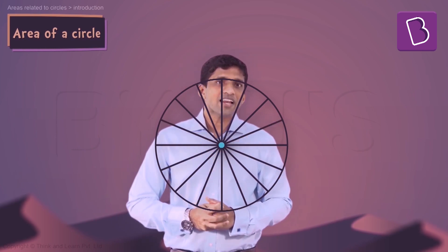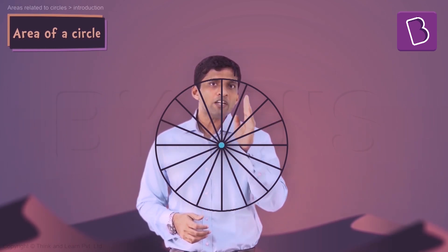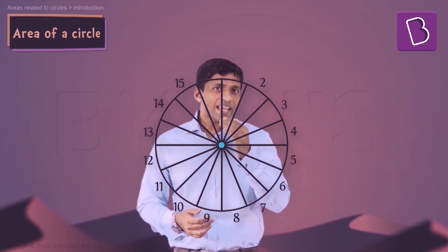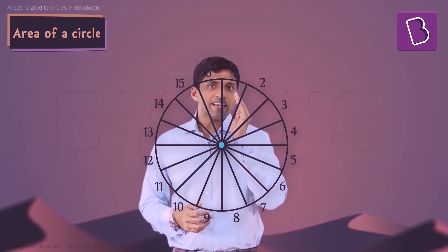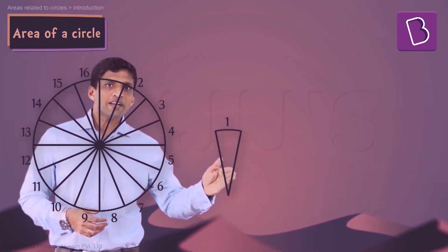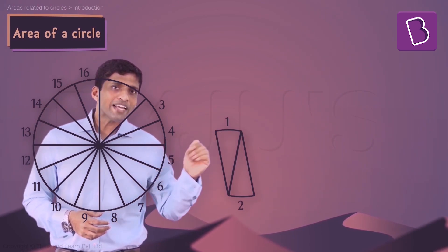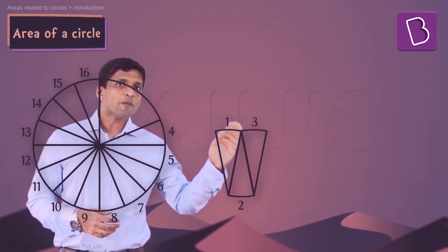Let's take 16 sectors like this and if I number them as 1, 2, 3, 4 up to 16. Now take each sector one by one, like take the first sector, keep it upright. Take the second sector and make it upside down and keep it next to each other. Third one keep it upright, fourth one keep it upside down.